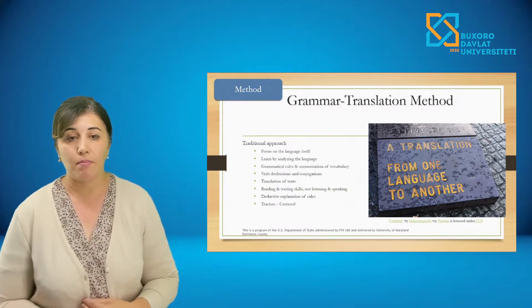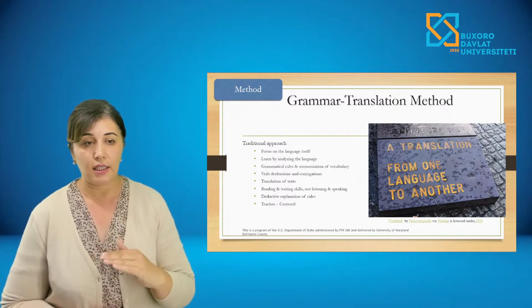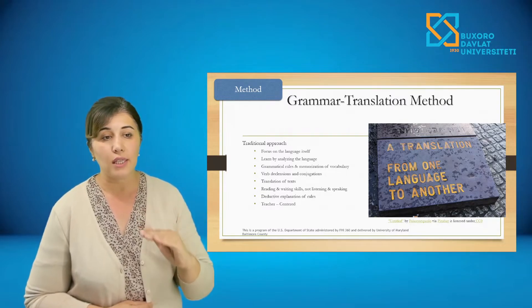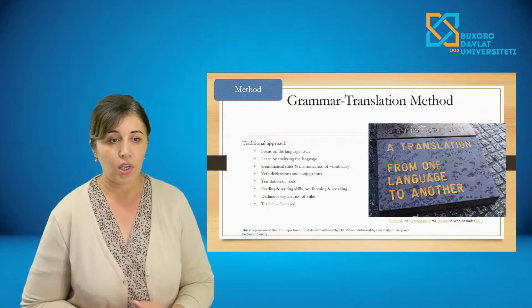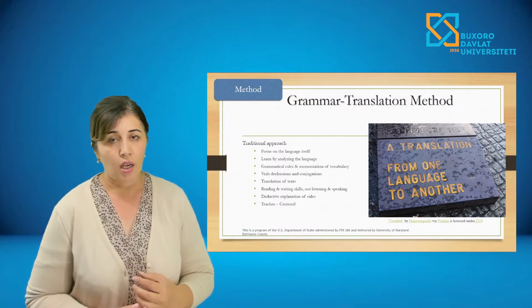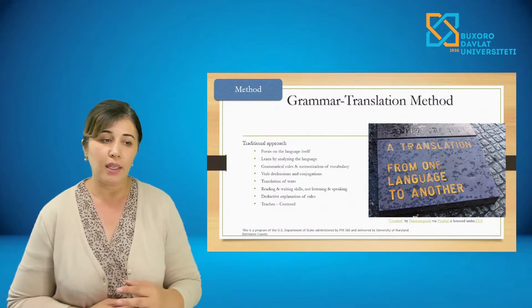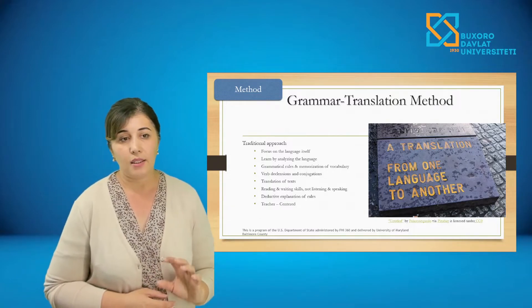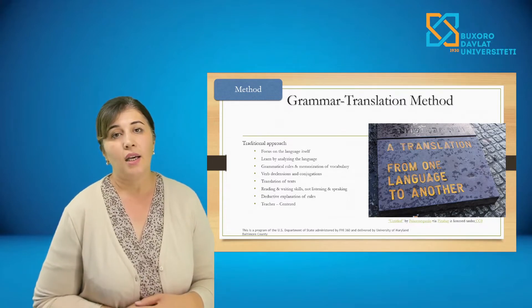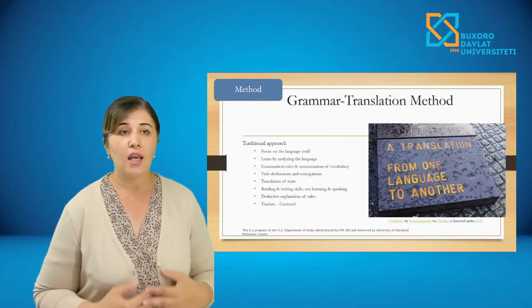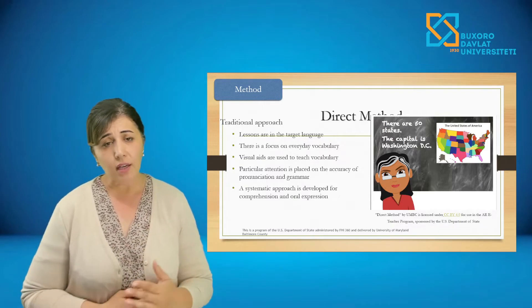Now about the grammar translation method. From the key words — grammar and translation — you can understand it involves translation from one language to another. This approach focuses on the language itself. It is a traditional approach where you learn by analyzing the language, learning grammatical rules, and memorizing structures and vocabulary — including verb declension and conjugation, translation of texts, with a main focus on reading and writing skills. Listening and speaking are ignored. Rules are presented deductively by the teacher, and learners are passive participants. This method is teacher-centered.